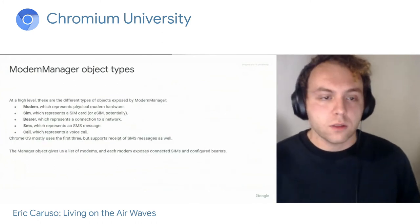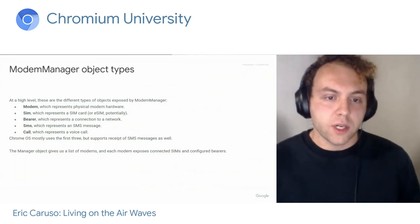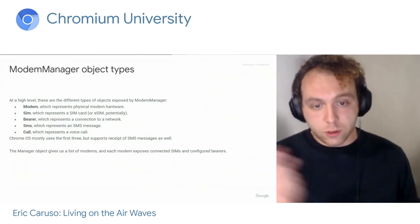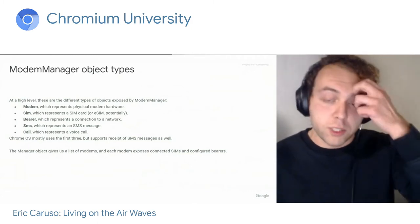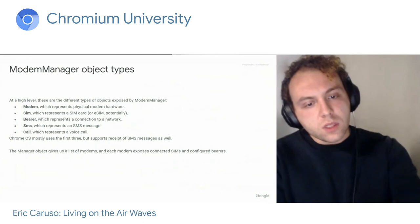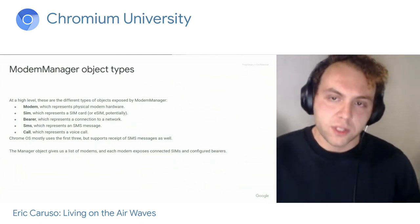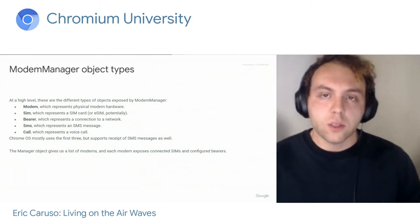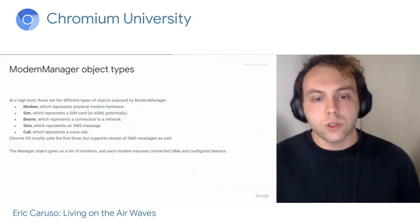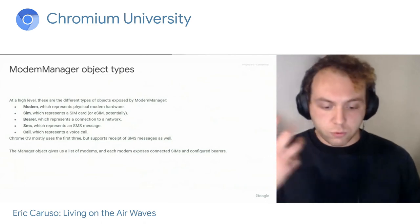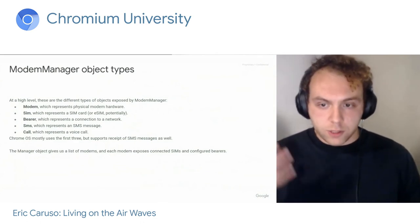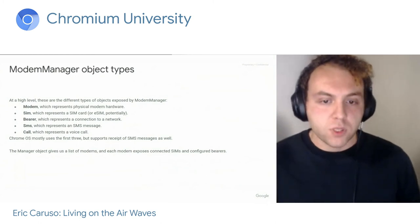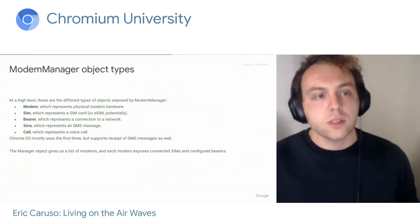A SIM object represents a SIM card — there could be several in a particular modem, but usually just one. There's a bearer object, which is a little more interesting — it represents a connection to a network. Cell networks, unlike your home Wi-Fi network, are managed: you don't negotiate IP configuration via DHCP. When you're negotiating to register with the network, it assigns you an IP address and tells you what DNS servers to use. Those details are transmitted back to your modem and exposed through the bearer object, which Shill can then use to set up the net interface so you can send packets.